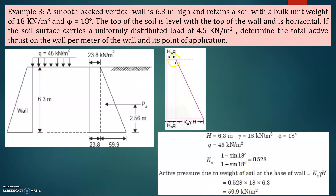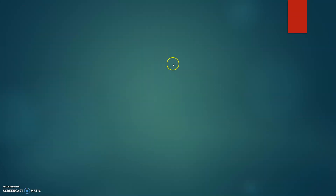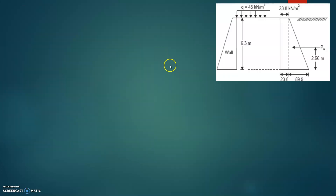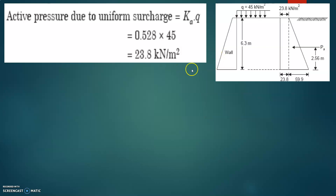Next, we calculate the pressure at the base due to the surcharge. That is Ka times Q. Ka is 0.528 and Q is given as 4.5 kilonewton per meter square. Substituting gives 23.8 kilonewton per meter square.